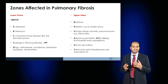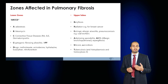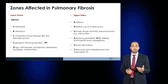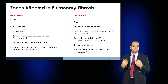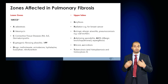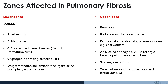Upper zone fibrosis is relatively rarer and caused by rarer conditions such as berylliosis, radiation (usually for breast cancer affecting the superior lung regions), extrinsic allergic alveolitis, pneumoconiosis such as coal workers' pneumoconiosis causing apical fibrosis, ankylosing spondylitis, ABPA, silicosis, sarcoidosis, tuberculosis, and histiocytosis.